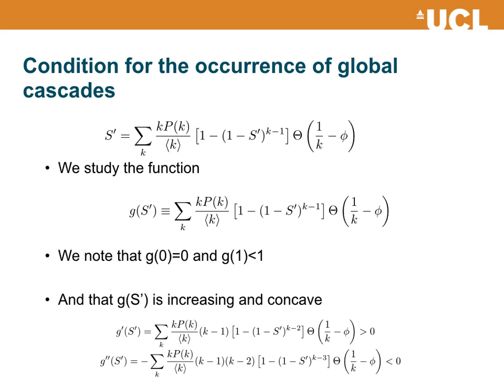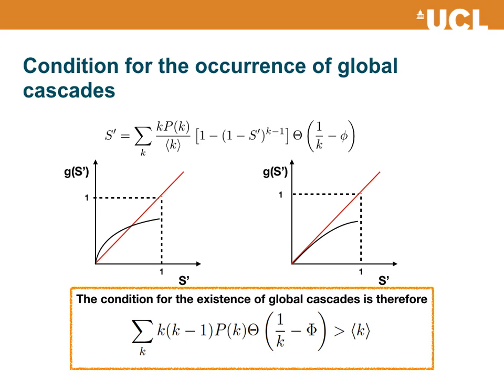The condition for the existence of a global cascade is that the first derivative of G computed at S' = 0 is larger than one. This relationship is a generalization of the Molloy-Reed criterion for the emergence of a giant component in a network. Indeed, if φ = 0, we recover the Molloy-Reed criterion, because with no activation threshold all nodes in the giant component are vulnerable and we get the same relationship.